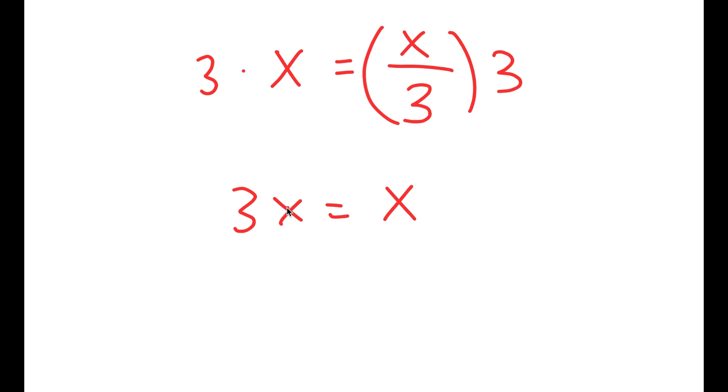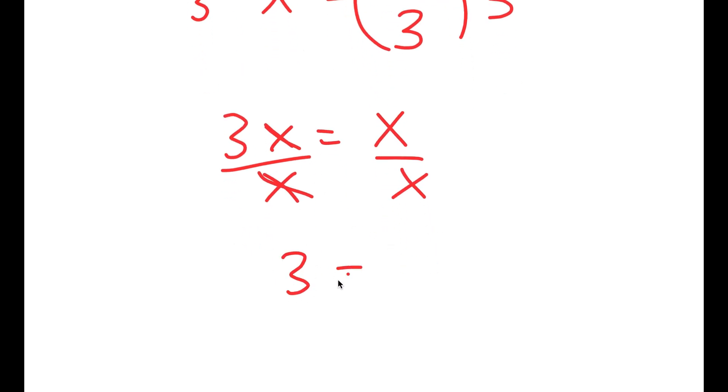From here, what most people would do is divide both sides by x, but if you do this you get 3 equals 1, which is an incorrect statement. So instead, what you should do is subtract x on both sides.